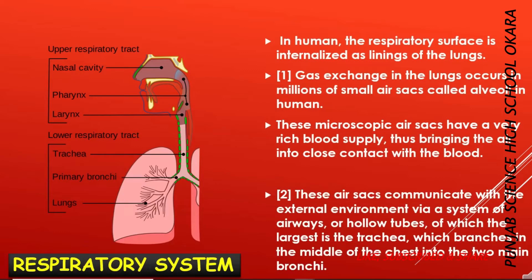In humans, the respiratory surface is internalized as linings of the lungs. Gas exchange in the lungs occurs in millions of small air sacs called alveoli in humans. These microscopic air sacs have a very rich blood supply, thus bringing the air into close contact with the blood. These air sacs communicate with the external environment via a system of airways, or hollow tubes, of which the largest is the trachea, which branches in the middle of the chest into the two main bronchi.